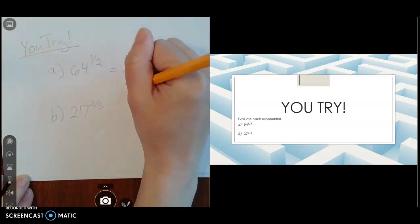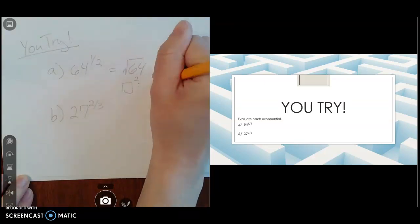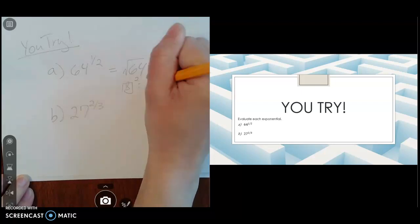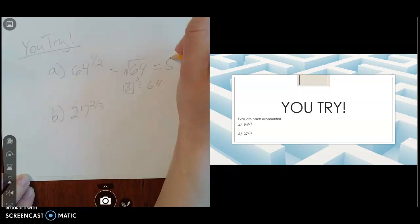Well, what to the second power is 64? 8 to the second power is 64, which means that the square root of 64 is 8.